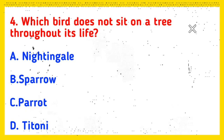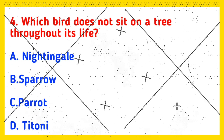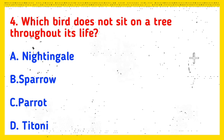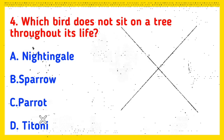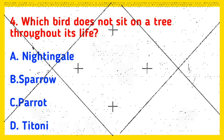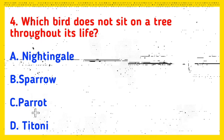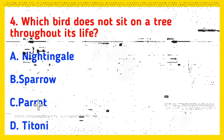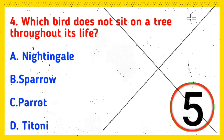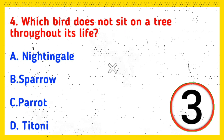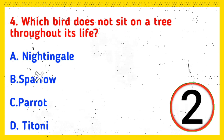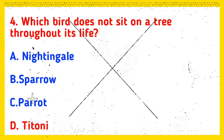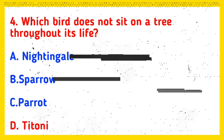Q4: Which bird does not sit on a tree throughout its life? Option A: Night Eagle, Option B: Supero, Option C: Parrot, Option D: Titani. And the correct answer is Option D, Titani.